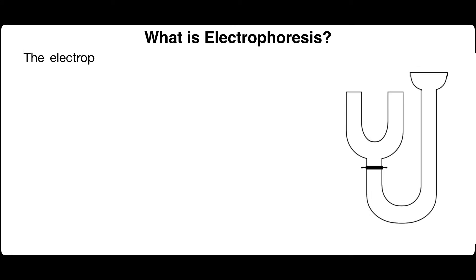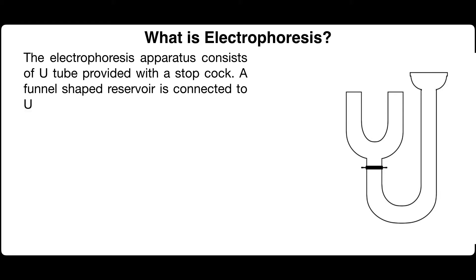The electrophoresis apparatus consists of U-shaped tube provided with a stopcock. A funnel-shaped reservoir is connected to U-shaped tube through this stopcock.